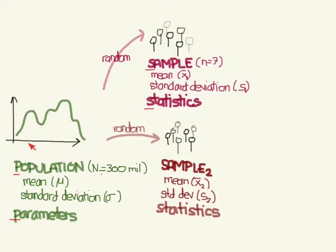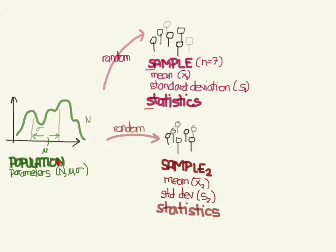First, we have the distribution for our population. Let's say it's not even a normal distribution — maybe this is weight, and we've got a lot of kids down here and a lot of adults up here, so it's definitely not normally distributed. But you do have a mean for this, which I drew over here, and there's also a standard deviation we can calculate, marked with sigma. And of course we have our n. So we have our population and its parameters: n, mu, and sigma. This is our distribution for that.